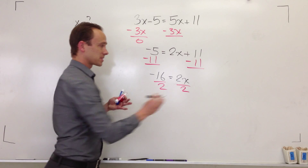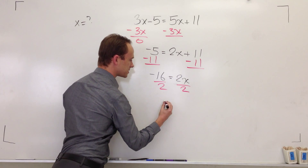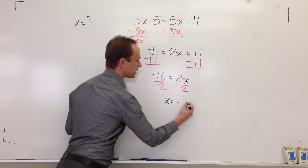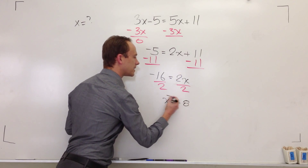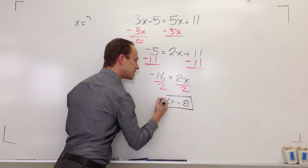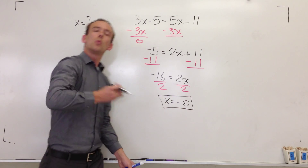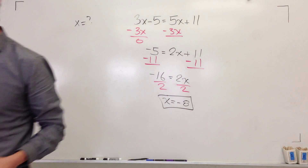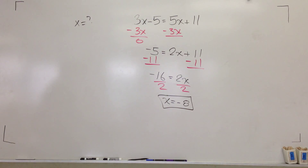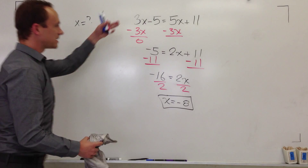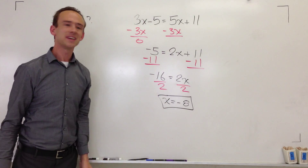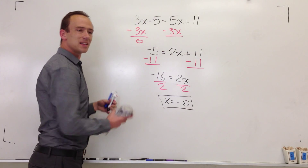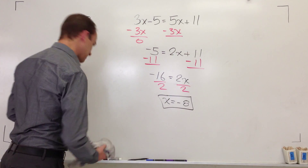Oh, you know this — that's the home run right there. I'm just going to switch it around and tell you that x is equal to negative 8. That is how we do it! Isn't that beautiful? Let's do another problem together.